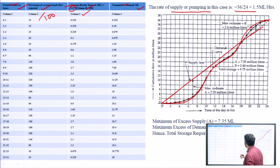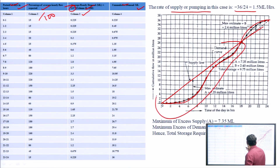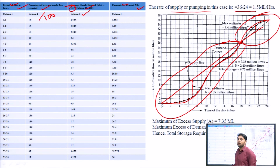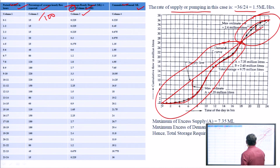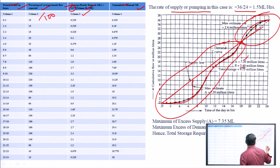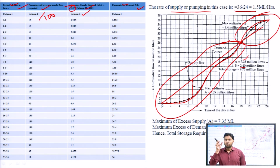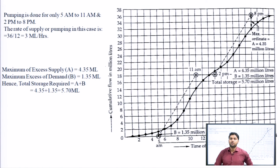After superimposing both curves: the portion where supply is in excess has a maximum ordinate of 7.35 million liters (excess supply), and the portion where demand is in excess has a maximum ordinate of 2.40 million liters (excess demand). Total storage required = 7.35 + 2.40 = 9.75 million liters for the 24-hour pumping case.